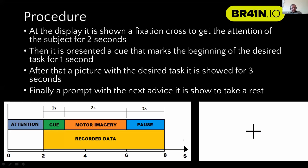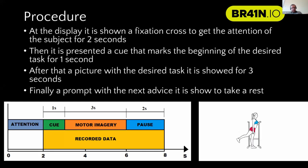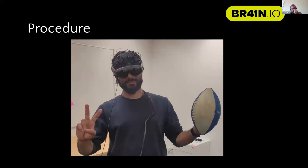We have a demonstration video showing the task. The subject sees a fixation cross to direct attention, then the cue is presented, and they perform the task either in real life, in a virtual environment, or by imagining it. There are three groups in the experiment.